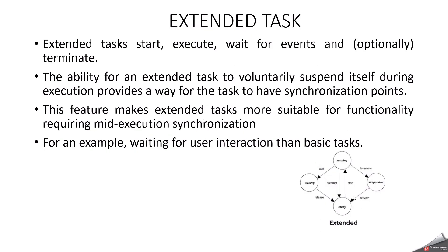Extended tasks have a waiting state as well. An extended task has: start, execute, wait for events, and terminate. Extended tasks usually exist in infinite loops — once they are running, they do not normally terminate. They can sleep in a waiting state pending the outcome of an event. An extended task moves from the running to the waiting state when it voluntarily suspends itself by waiting on an event. An event is simply a system object used to provide an indicator for a system event. If an extended task is waiting on an event, then tasks of lower priority are allowed to run.